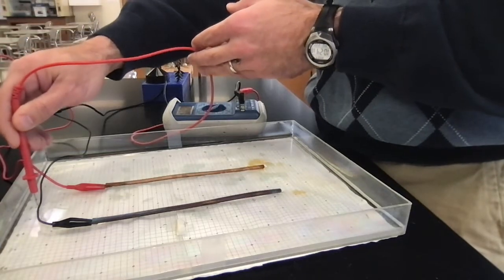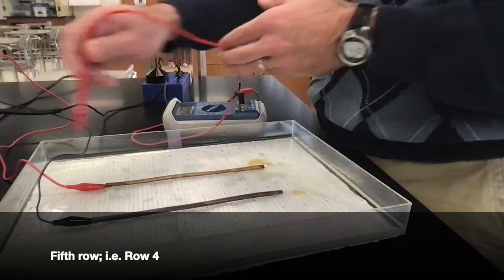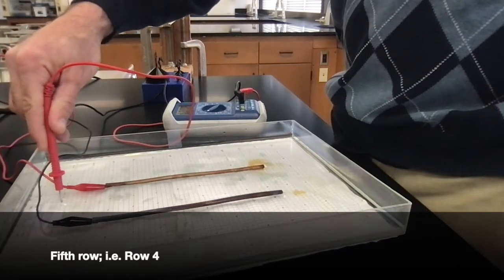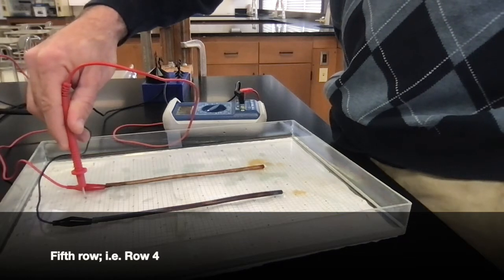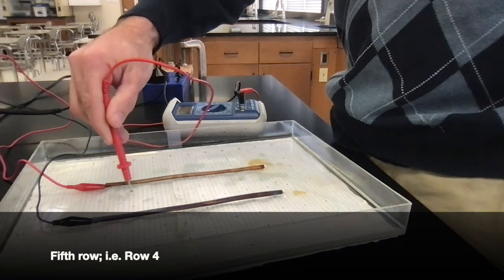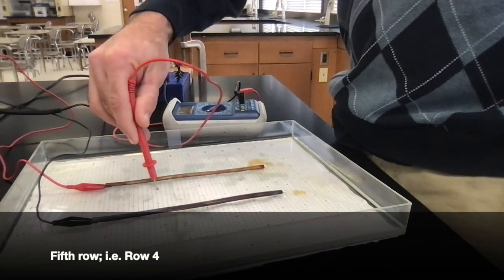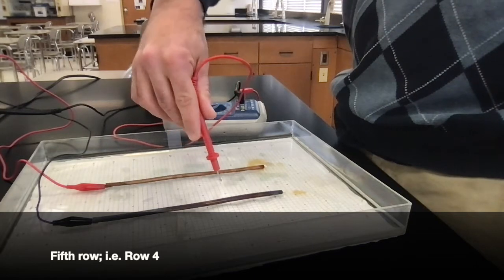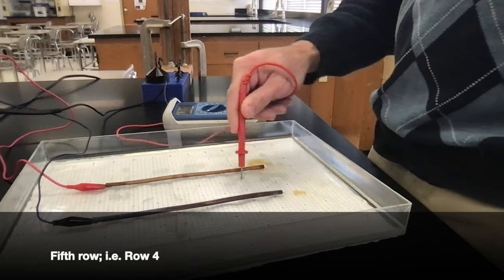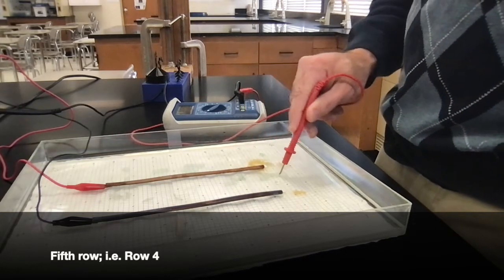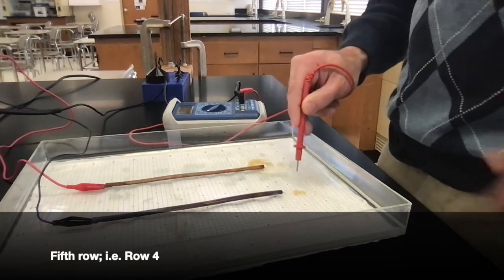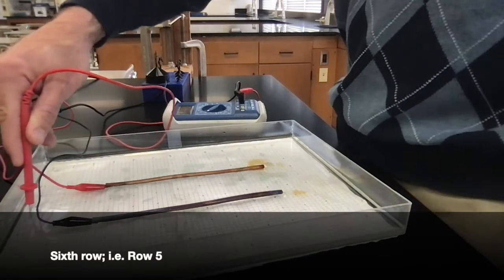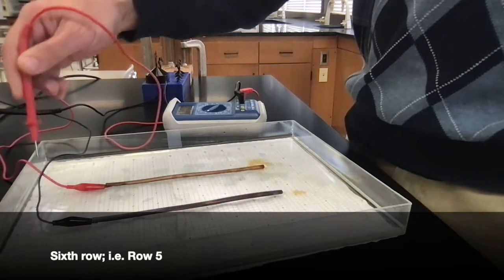Down to the fifth row labeled row 4. First column labeled 0 is 5.6, 1 is 5.7, 2 is 5.9, 3 is 6.7, 4 is 7.1, 5 is 7.1, 6 is 7.3, 7 is 7.1, 8 is 7.3, 9 is 7.1, 10 is 6.9, 11 is 6.5, 12 is 6.4. Down to the sixth row labeled row 5.